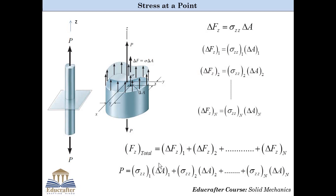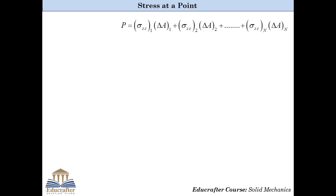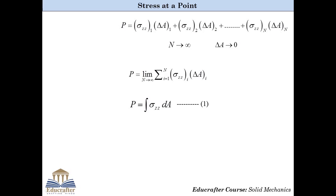Substituting, we get P equals sigma Zz(1) times delta A1 plus sigma Zz(2) times delta A2, and so on up to sigma Zz(n) times delta An. Since sigma Zz is only defined when the number of elements tends to infinity — meaning delta A tends to zero — P is the summation of an infinite number of elements. This can be represented as the summation of sigma Zz(i) times delta A(i) as i runs from 1 to N and N tends to infinity. As this is how integration is defined, we can say that capital P equals the integral of sigma Zz over the entire area.